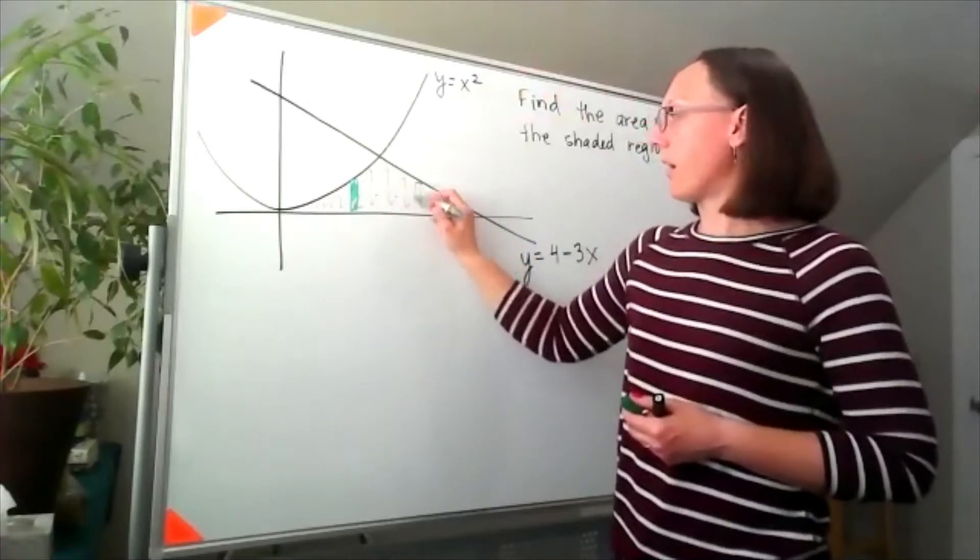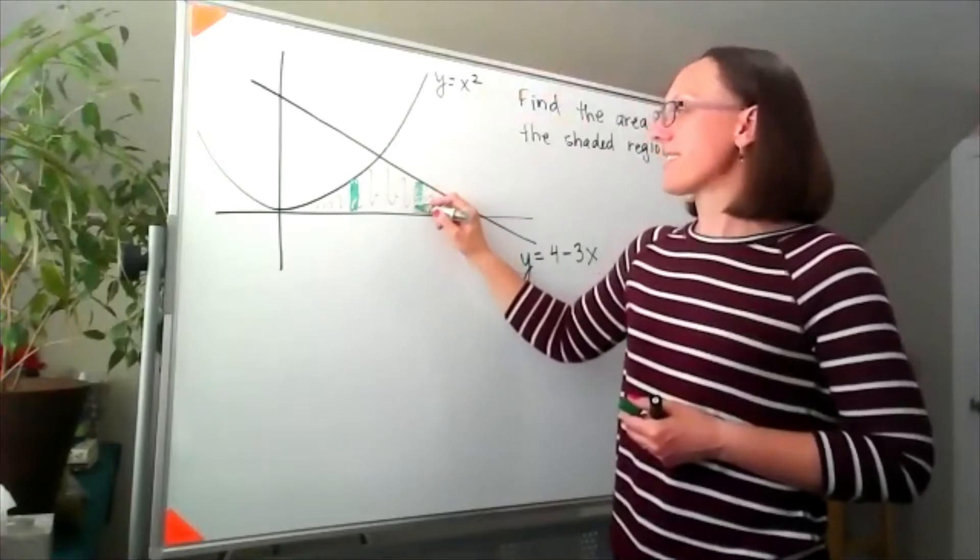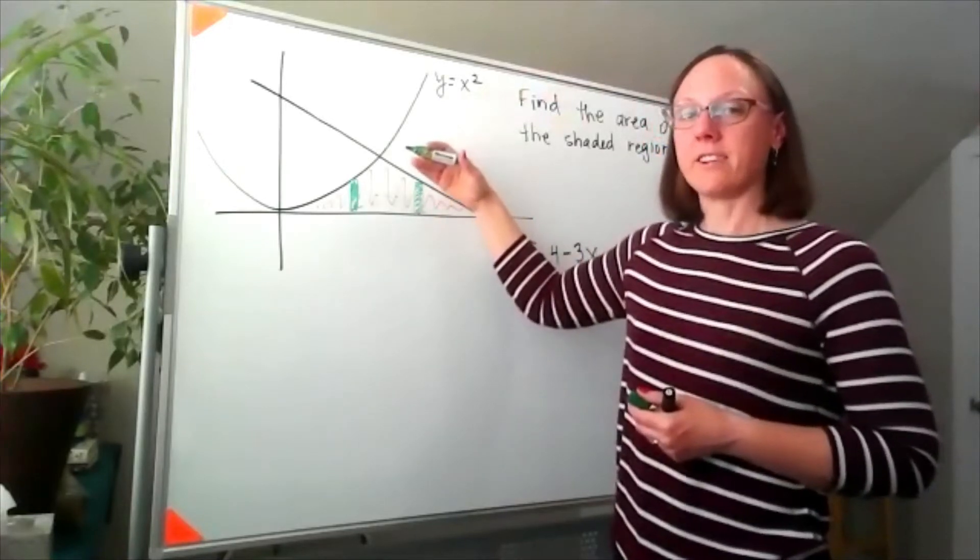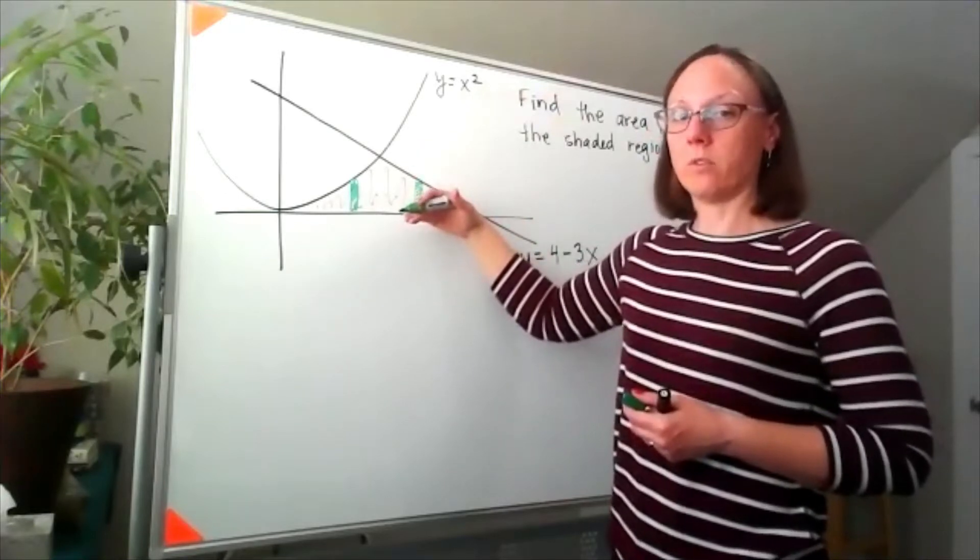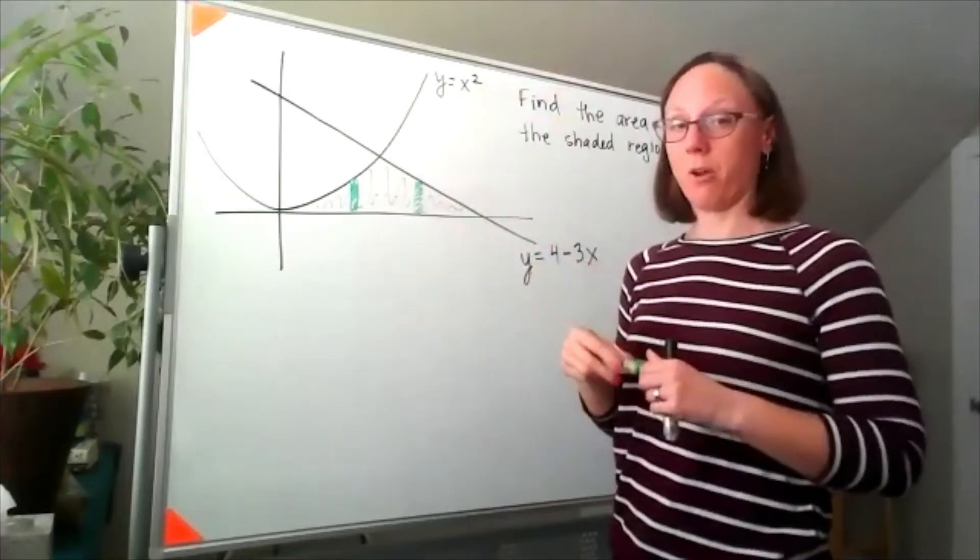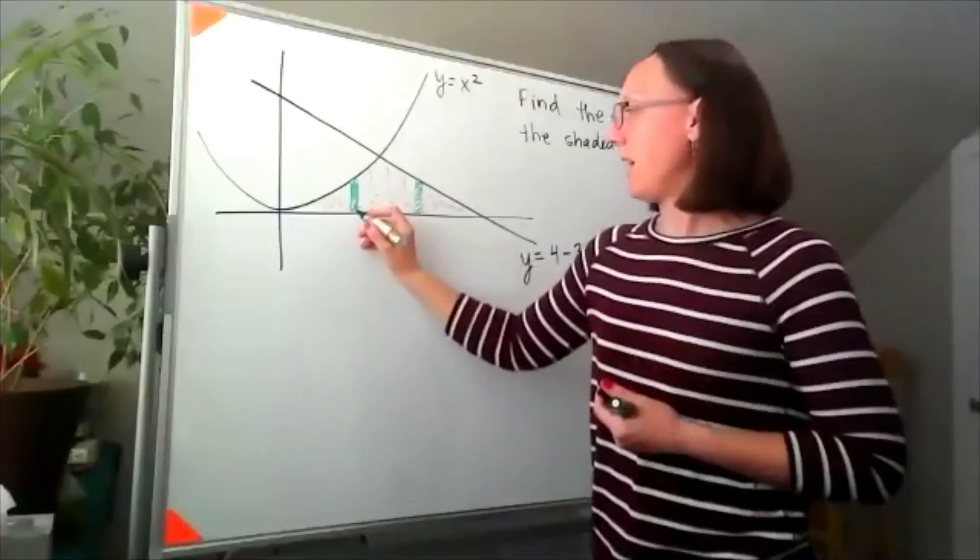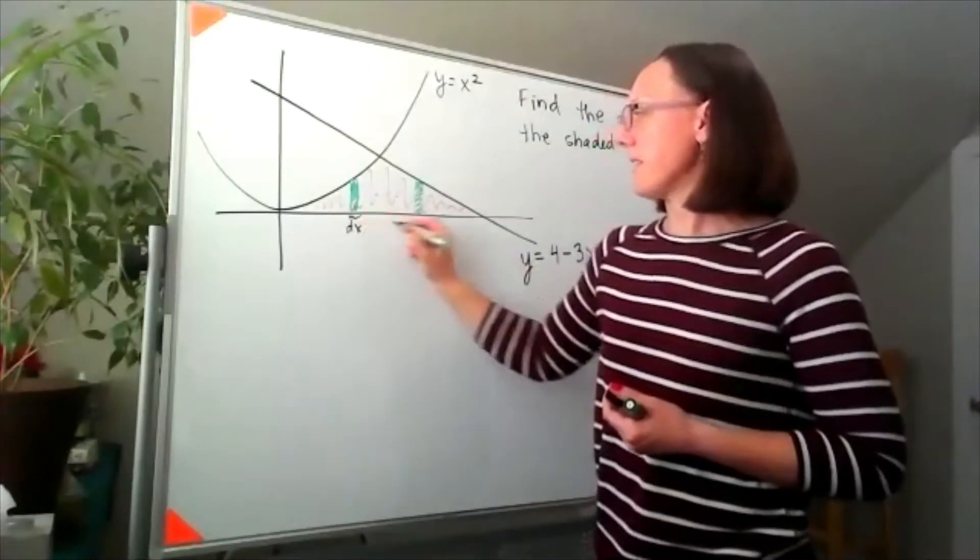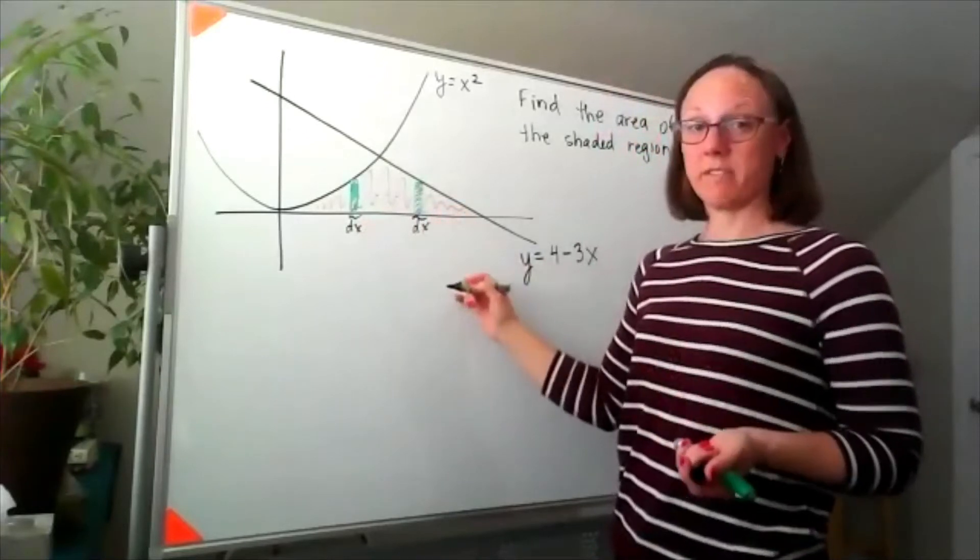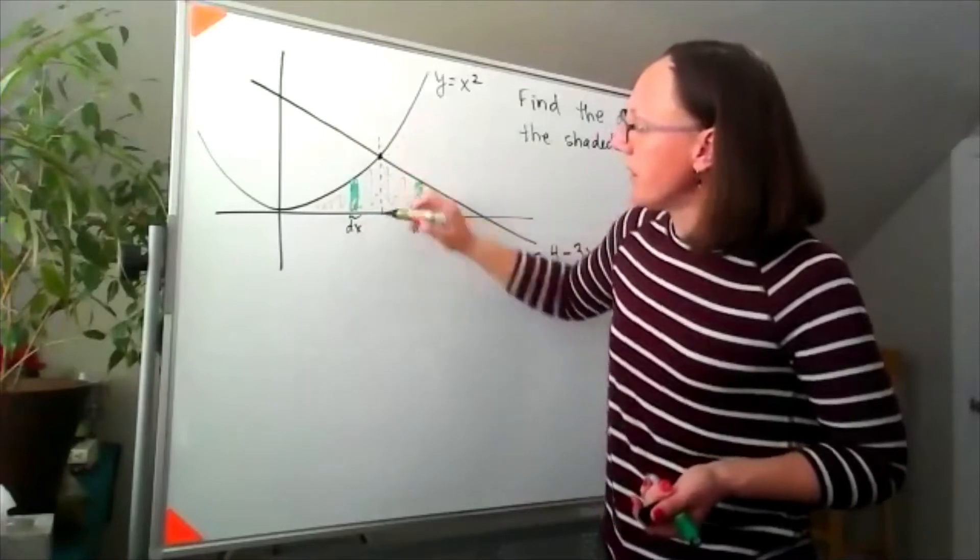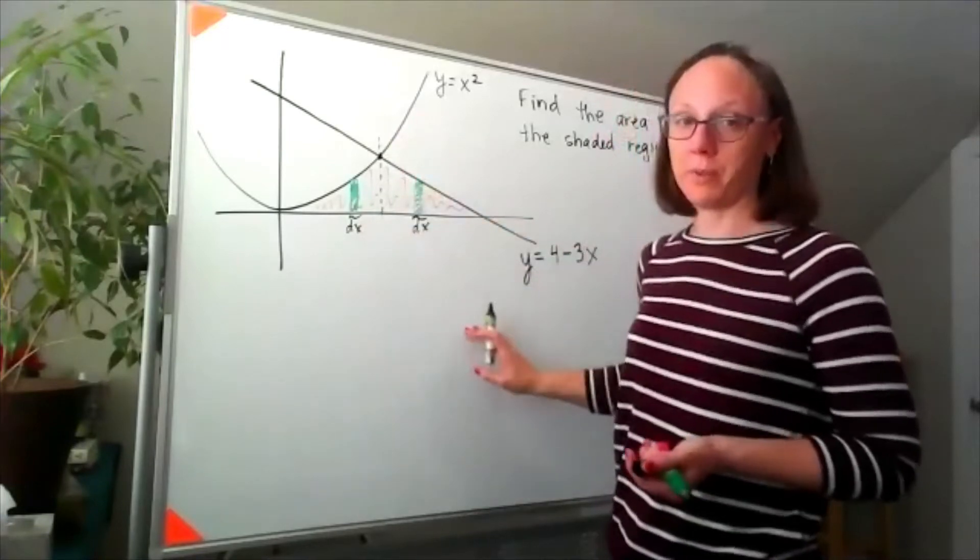But if I move over here, now my cross sections have, my arbitrary cross sections have a line as their top function and y equals zero as their bottom function. So if we were to write this as little bits of dx sorts of integrals, we'd have to know what this point was to write this as two separate pieces.